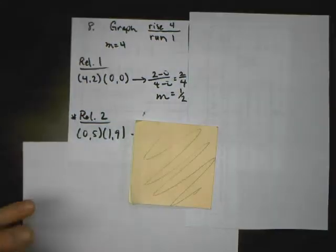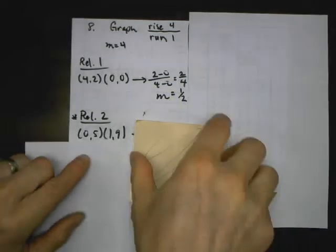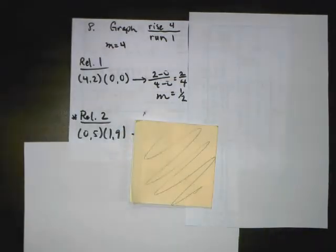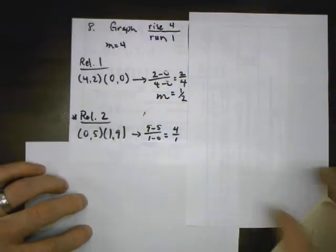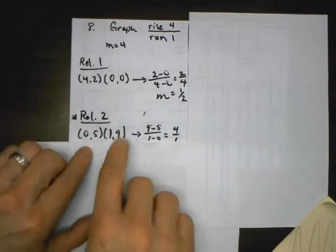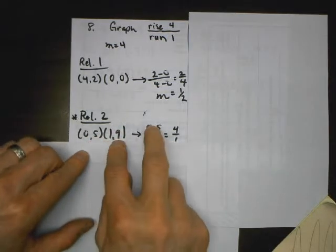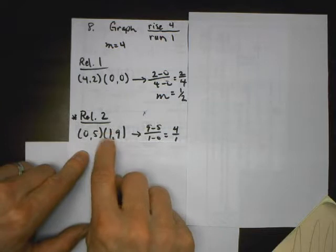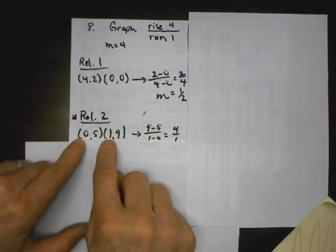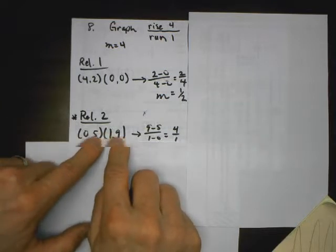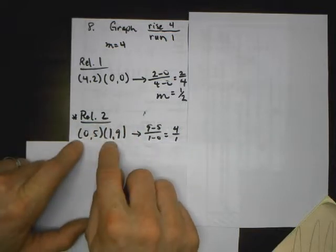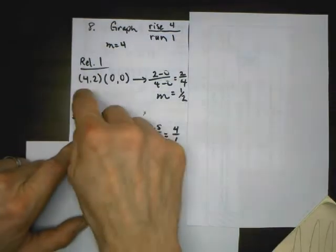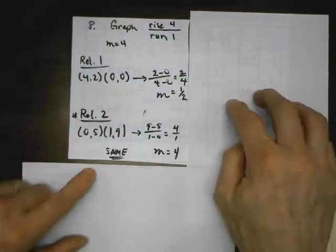Relation 2 says a line contains these two points, so I use those two given points. I go y minus y over x minus x — I started on the right side this time to avoid a negative, but I have to be consistent: right minus left over right minus left, or left minus right over left minus right. Same order. I get a slope of 4 — that's the same.